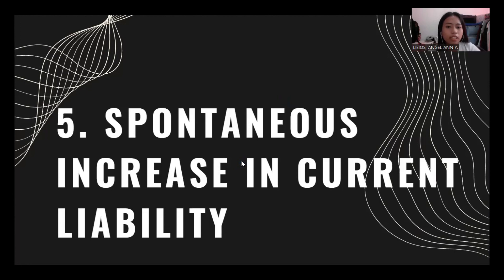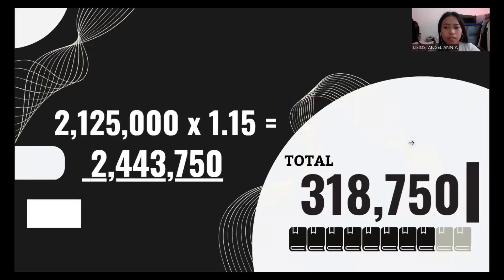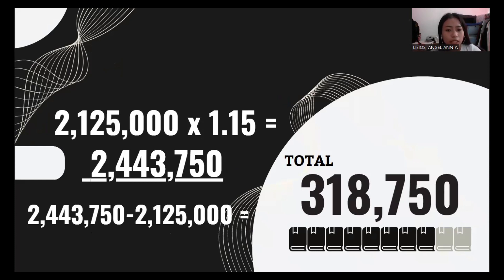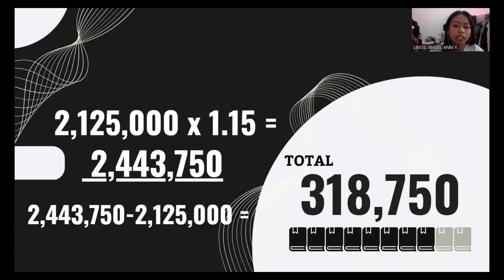Number five, spontaneous increase in current liabilities. To get the current liabilities, 2,125,000 multiplied by the expected sales increase of 1.15 equals 2,443,750, minus 2,125,000, equals 318,750. That is the spontaneous increase in current liabilities.